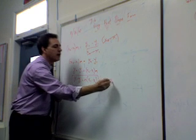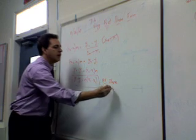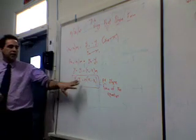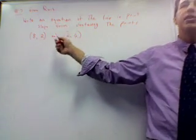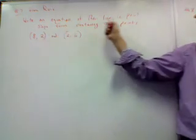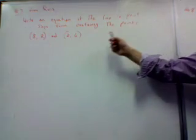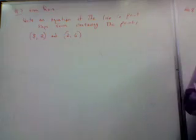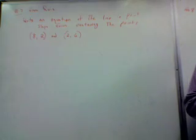That's actually the point-slope form of the equation. Now write this down. Now what you really need to do is use it to get used to how to use it. So the question reads like this. This is from the quiz. We're going to do it again with the point-slope form method. Write an equation of the line in point-slope form containing the points 8, 2 and 2, 6.